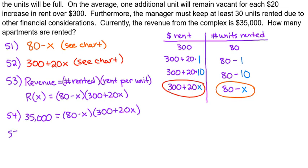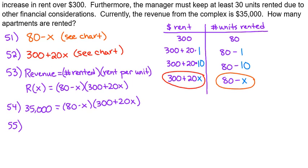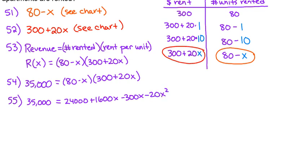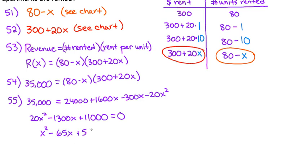Number 55 asks us to solve that equation for x. We're going to FOIL multiply all of that out, and we end up with 24,000 plus 1600x minus 300x minus 20x squared. Simplifying — combining like terms and getting everything over to one side — we have 20x squared minus 1300x plus 11,000 equals zero. Dividing both sides by 20 gives us x squared minus 65x plus 550 equals zero.